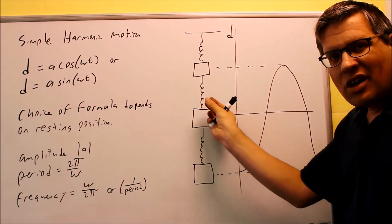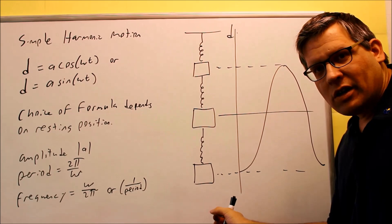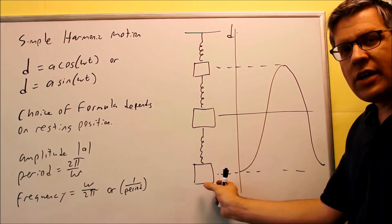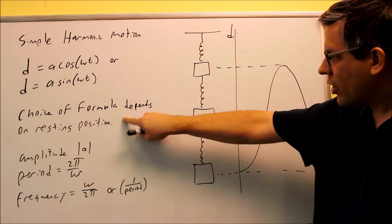So let's say you have a spring and you're pulling the weight down this way and then you let it go. Well, we're pulling it down so we're starting the graph out way down here, down below. So basically this right here, the choice of the formula depends on your resting position.